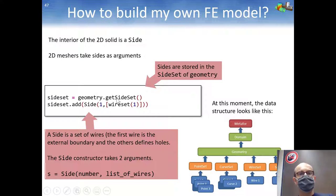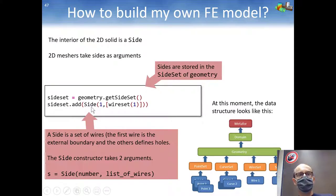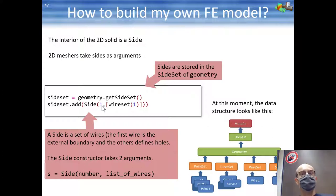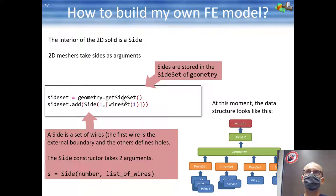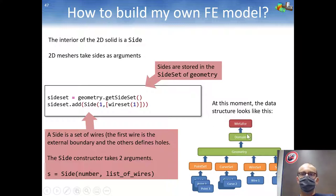The last step is the side — the last level. Sides are taken from the geometry with a getSideSet() command. Once you have the side set, you can call the add command to add a side — numbered 1 here. A side is defined as a series of wires. Why a series? Because you can have an external boundary but also holes — the first wire is the external boundary, and a second wire would be an internal hole. At this point we have Metaphor, the domain, geometry, and then sets of geometrical entities: points, curves, wires, and sides.